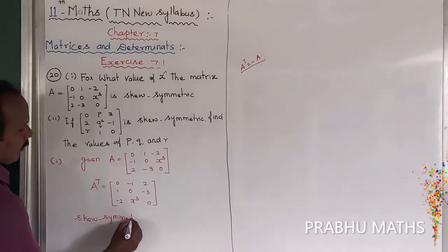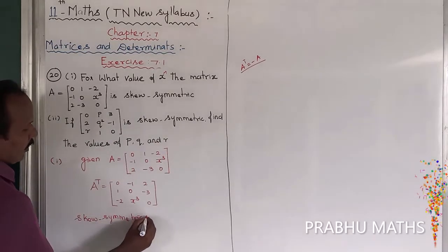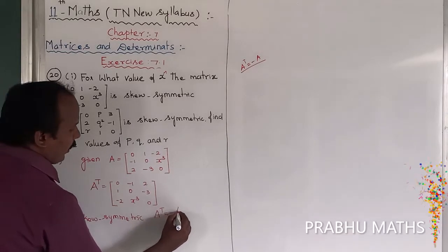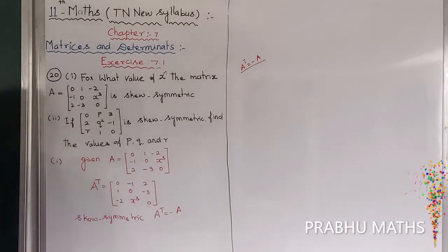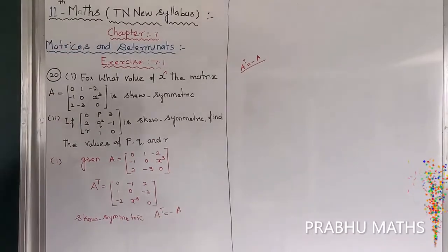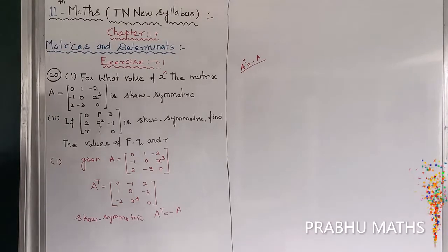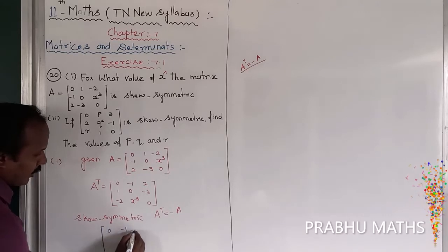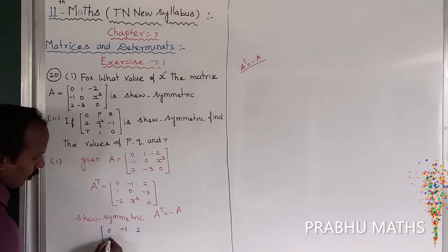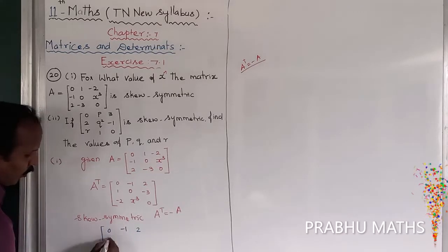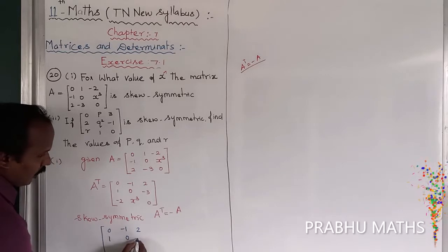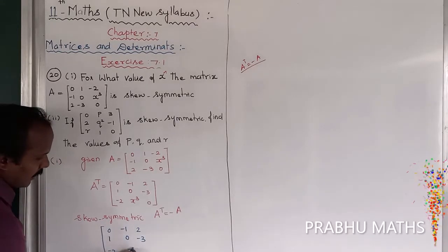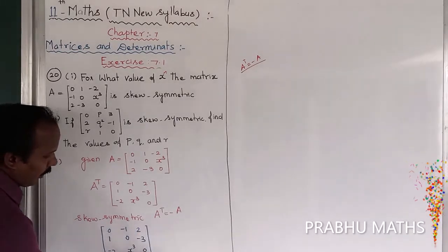Given that this is a skew matrix, the condition is A transpose is equal to minus A. Now writing out the A transpose values: 0, minus 1, 2; then 1, 0, minus 3; and then minus 2, X cubed, 0.